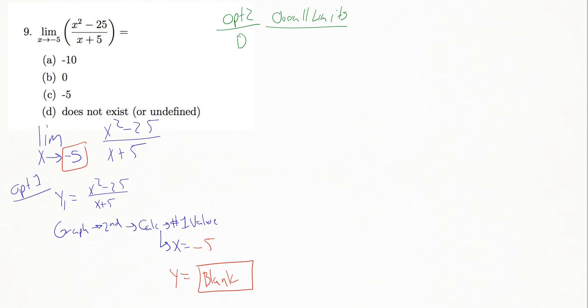anytime I'm talking about an overall limit, I'm really asking myself, does the left-hand limit equal the right-hand limit? And if the answer to that is yes, then the overall is the same. If the answer to that was no, then the overall does not exist, or DNE as we sometimes notate it.